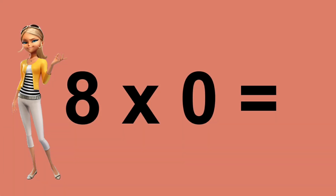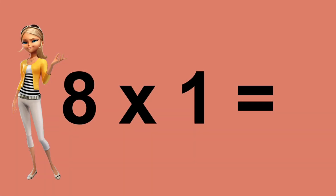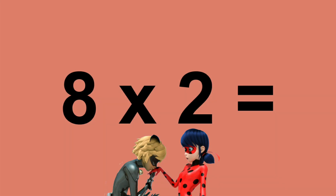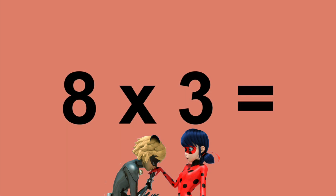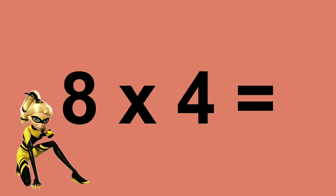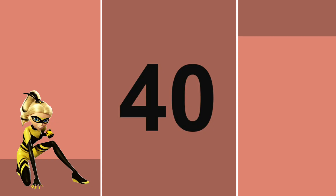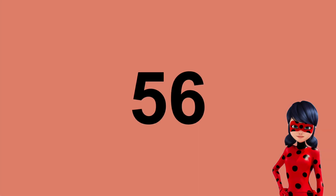Eight times zero equals zero. Eight times one equals eight. Eight times two equals sixteen. Eight times three equals twenty-four. Eight times four equals thirty-two. Eight times five equals forty. Eight times six equals forty-eight.